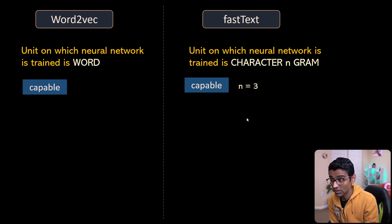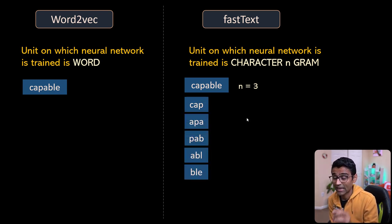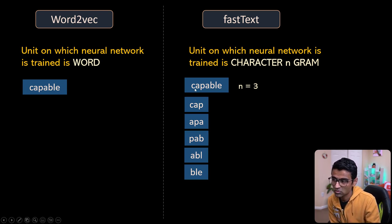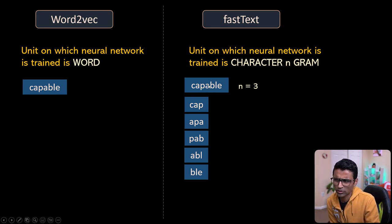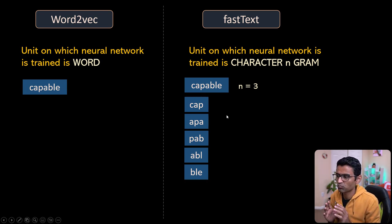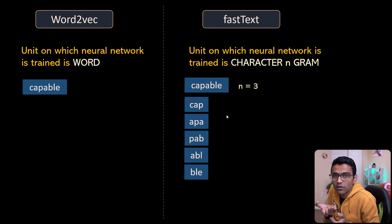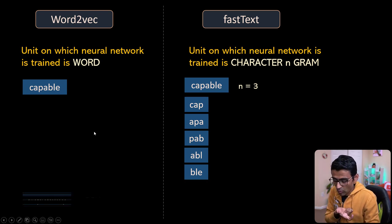N equal to three means the character n-grams for the word 'capable' will be: 'cap', then 'apa', then 'pab', and so on. You also take the entire word as well in that set, but the idea is you are breaking apart the word and using character n-grams to train your model.